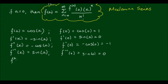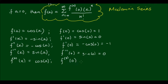The fourth derivative is cos(x) once more, and this evaluated at 0 is equal to 1. So we have a bit of a pattern developing here: 1, 0, negative 1, 0, 1. The next term will be 0, the following term will be negative 1, and so on and so forth.